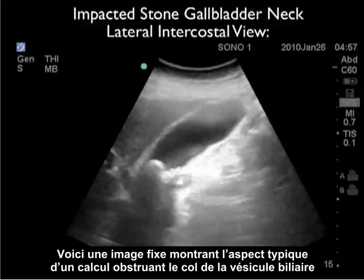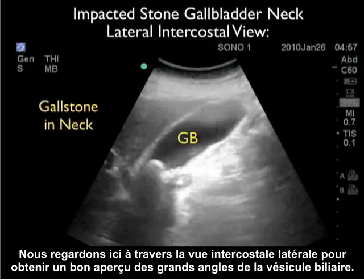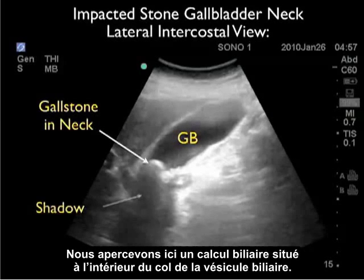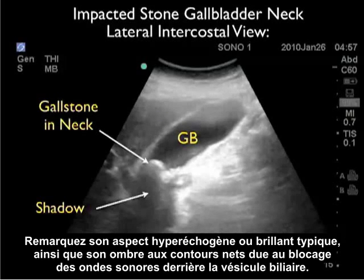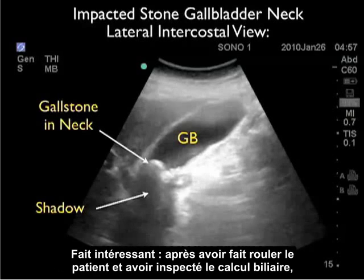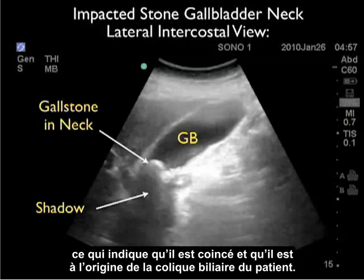Here's a still image showing the classic appearance of an impacted stone at the gallbladder neck. We're looking through the lateral intercostal view, giving a nice long axis view of the gallbladder. We can see a gallstone located within the neck of the gallbladder with the classic bright or hyperechoic appearance, and we see the hard shadow — the blackout of sound waves posterior to the gallstone. Interestingly, as we rolled the patient around and inspected the gallstone, it failed to move, confirming it was impacted and the cause of the patient's biliary colic.